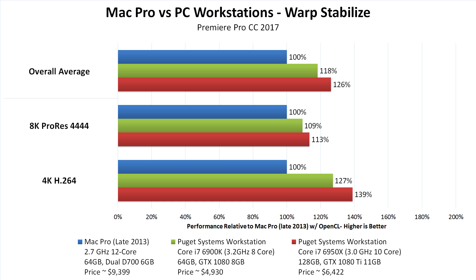At 8K, the Mac Pro actually does pretty well. Our more affordable PC was only around 9% faster, and our higher-end PC was about 13% faster. However, at 4K the performance difference is quite a bit larger — our affordable PC is 27% faster and our higher-end PC is 39% faster. On average you're looking at about an 18% performance gain from the PC that is half the cost of the Mac Pro, or a 26% gain from our higher-end PC. In terms of time saved, if a Warp Stabilize takes 30 minutes on a Mac Pro, you should be able to get that down to about 24 or 25 minutes using a PC workstation.